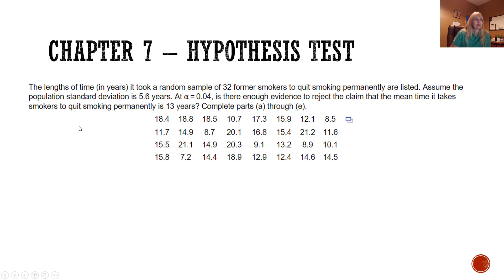Hypothesis testing. The length of time in years it took a random sample of 32 former smokers to quit smoking permanently are listed here. Assume the population standard deviation is 5.6 - Z test. We're gonna test this at an alpha of 0.04 to see if we want to reject the claim that the mean time it takes smokers to quit smoking permanently is 13 years. The null in this case is the claim that it takes 13 years, and the alternative would just be not equal. We find our test statistic: sample mean minus the null divided by the population standard deviation over the square root of the sample size, and I get 1.53.